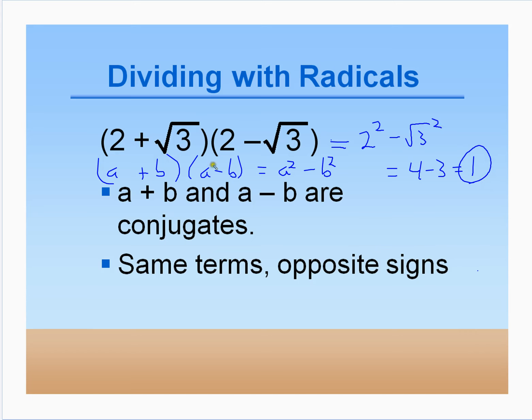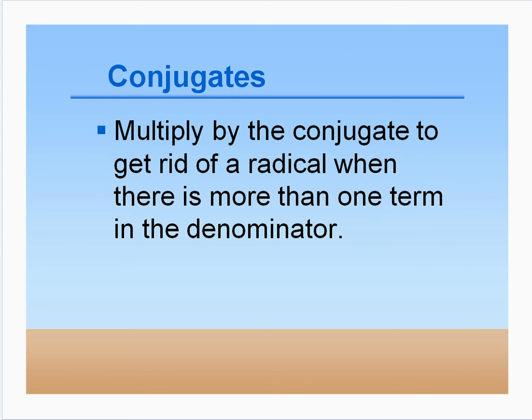We're going to use this concept to help us simplify radicals. We'll multiply by the conjugate to get rid of radicals when there's more than one term in the denominator.